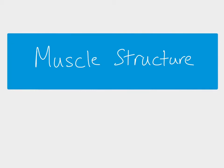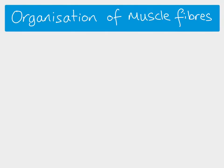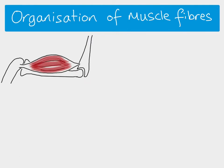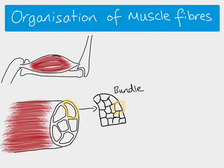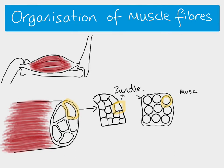This video looks at the structure of striated muscles. If you take a muscle attached to the bone at each end, it's made up of lots of bundles, and each of those bundles is made up of smaller bundles. Looking at a bundle in more detail, you'll see it's made up of lots and lots of muscle fibers — these are the muscle cells. A muscle fiber is a long cylindrical object.